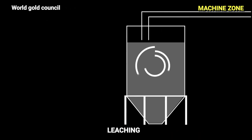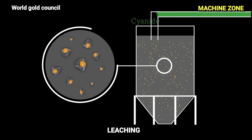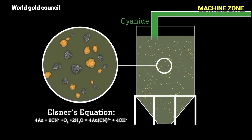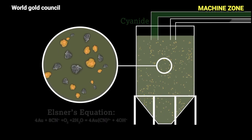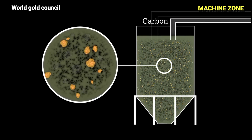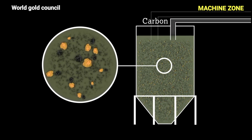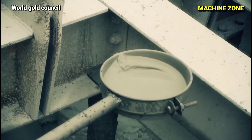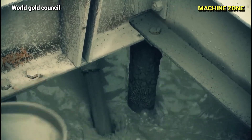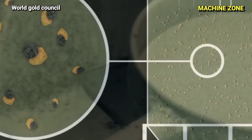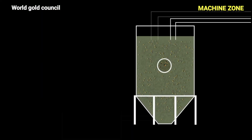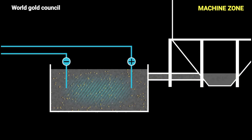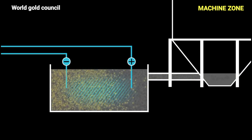Leaching is based on the fact that gold can be dissolved in a solution of cyanide. When the slurry is mixed with a cyanide solution, the gold particles will dissolve into the solution. The gold can then be recovered from the solution using a process called electrolysis.